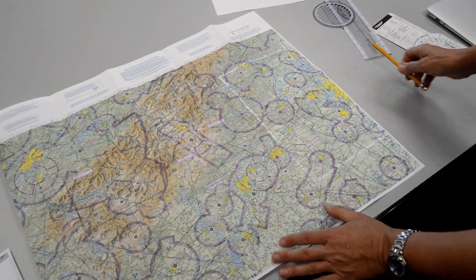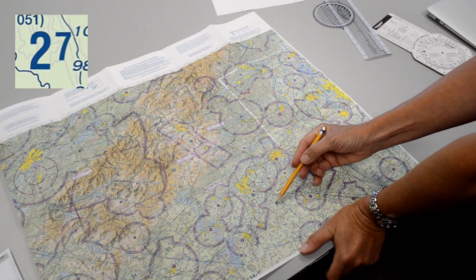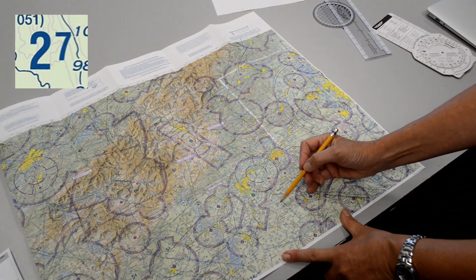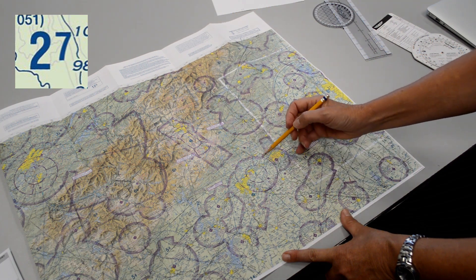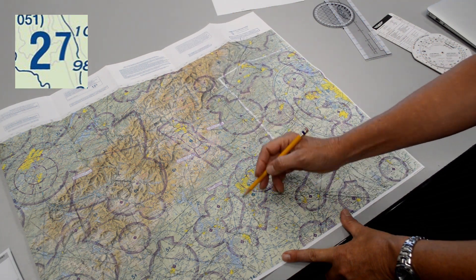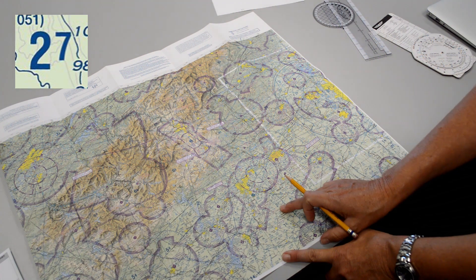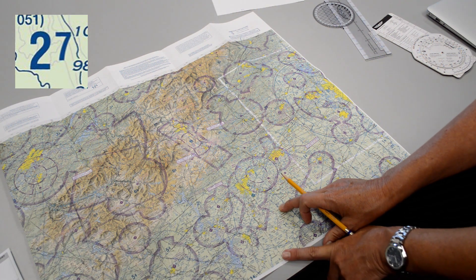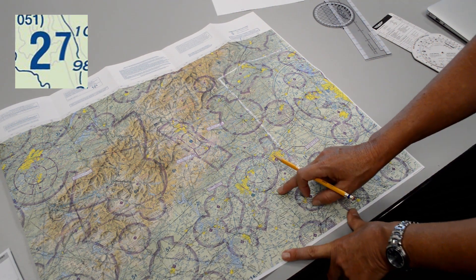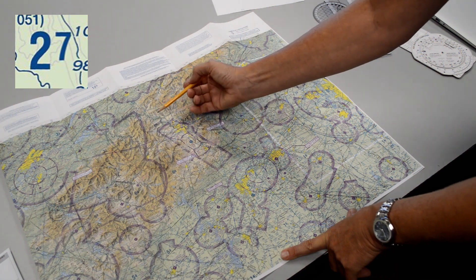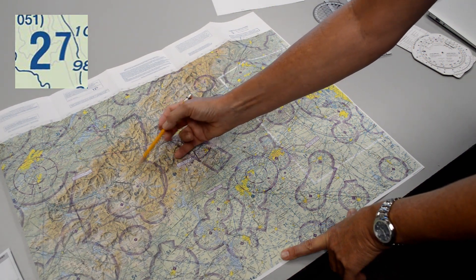The other thing we want to pay particular attention to is our MEFs, this is maximum elevation figures and what this is showing us is what is the highest obstacle in this lat-long grid box and they round it up and add 100 feet in non-mountainous and they round it up and add 300 feet I believe in the mountainous area.